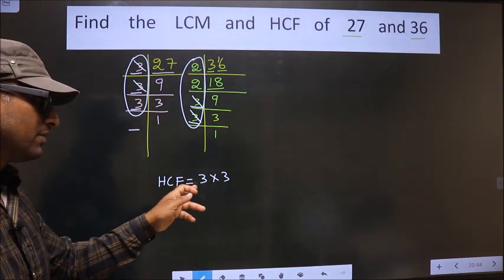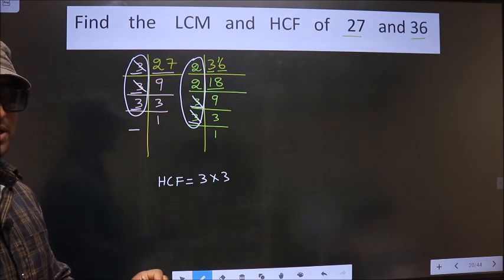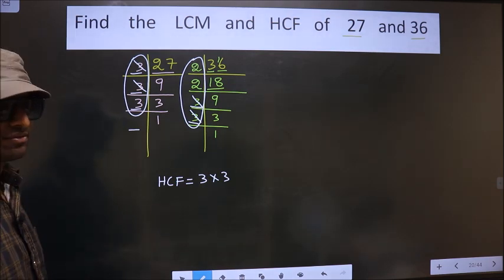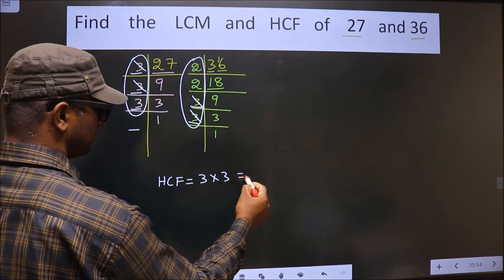Therefore, now you multiply these numbers, whatever number you get, that is your HCF. That is 3 into 3, 9.